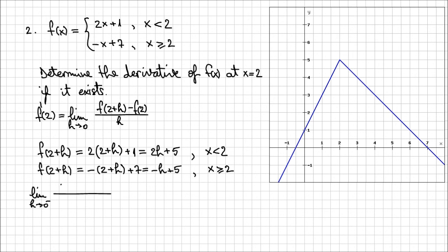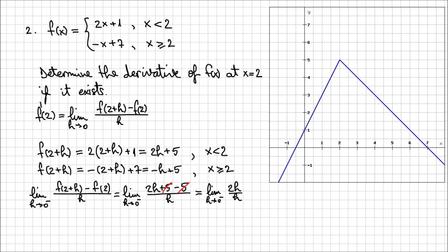Let's calculate the left-hand limit first. The limit as h approaches 0 from the left of [f(2+h) minus f(2)] over h: we replace f(2+h) with 2h+5 (the expression from the x less than 2 branch) and f(2) with 5, giving (2h+5 minus 5) over h. The plus 5 minus 5 cancels to 0, leaving the limit as h approaches 0 from the left of 2h over h. Canceling h gives us 2. So the left-hand limit is 2.